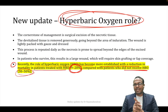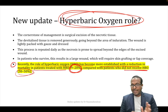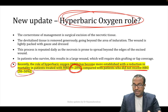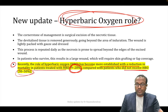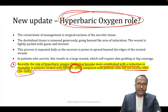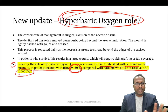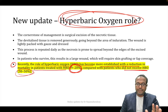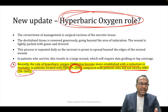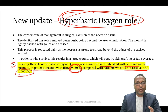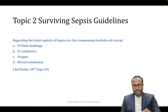Necrotizing fasciitis is a favorite question for National Board and AIIMS examiners. It is discussed in five chapters in Bailey and Love, so the question can come from anywhere. The gold standard investigation is tissue biopsy showing obliterative vasculitis. Hyperbaric oxygen therapy is a key new update.